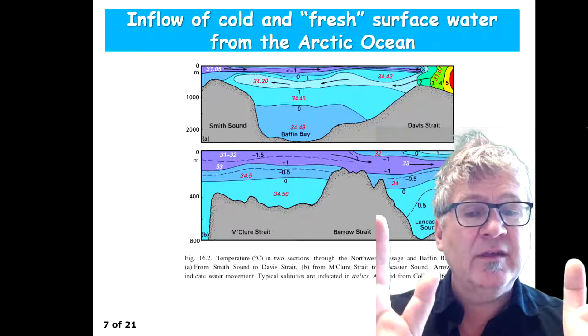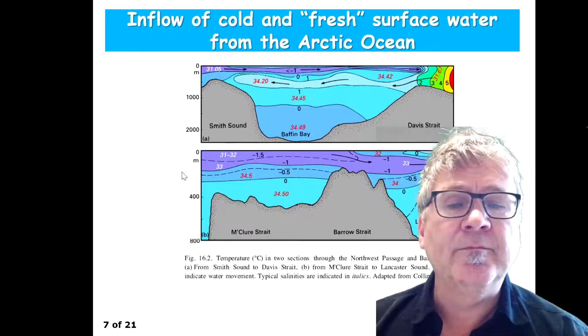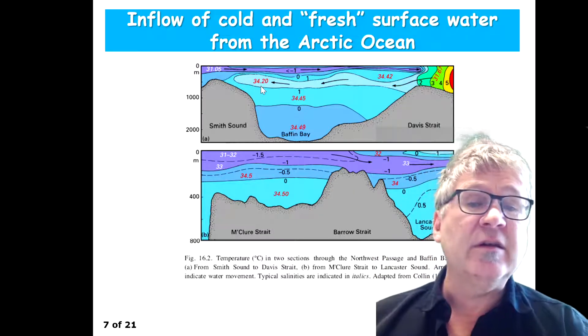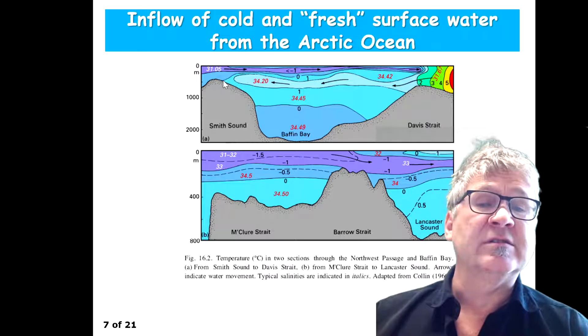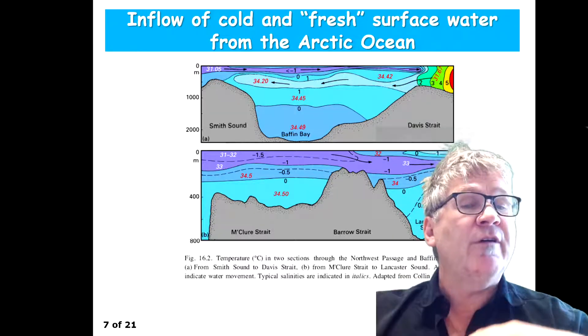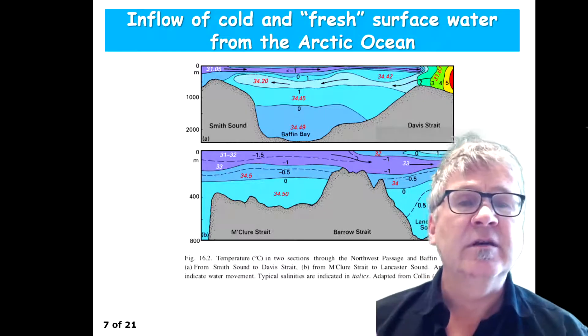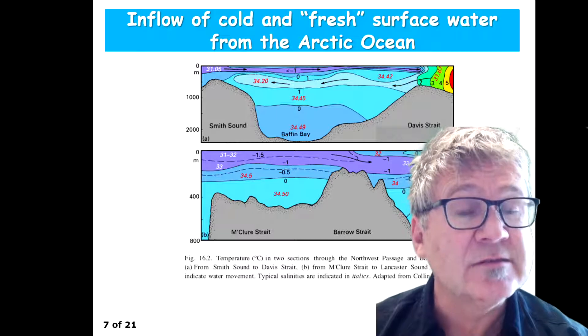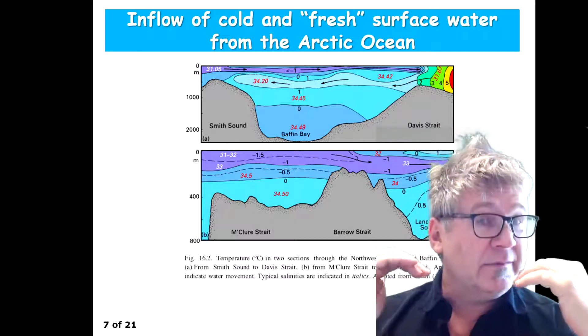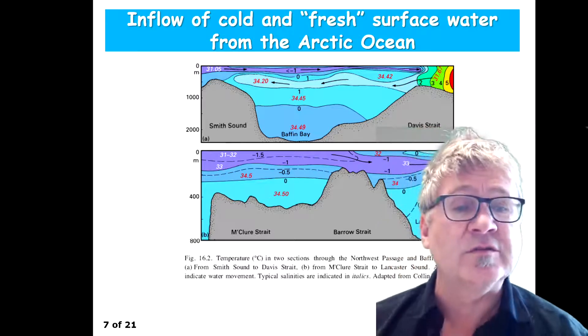Let's have a look at the Smith Sound, Davis Strait, Baffin Bay structure there. And here you can see very interesting structures. You have the typical polar feature of having very cold, low salinity water at the surface. And this supports the creation of sea ice. And the existing sea ice doesn't melt because the surface water is cold.